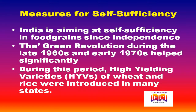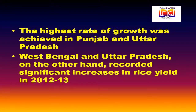Indira Gandhi, the then Prime Minister of India, officially recorded the impressive progress of the Green Revolution by releasing a special stamp entitled 'Wheat Revolution' in July 1968. During this period, production of food grains in Uttarakhand, Jharkhand, Assam and Tamil Nadu dropped, while West Bengal and Uttar Pradesh recorded a significant increase in rice yield in 2012–13.